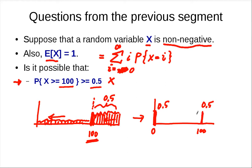This simplified random variable has an expected value that cannot be greater than X, because we pushed everything down. But even for this simplified variable, the expected value is at least 50. Yet we know the expected value of X is just 1 — so it is impossible to have the probability of X larger than 100 be as large as 0.5.